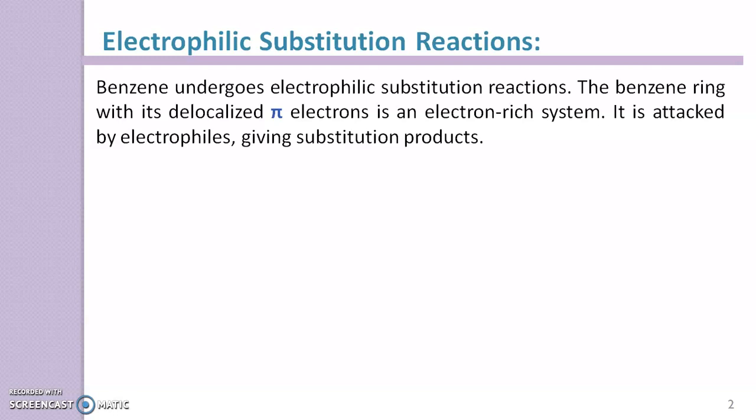Benzene undergoes electrophilic substitution reactions. The benzene ring, with its delocalized pi electrons, is an electron-rich system. It is attacked by electrophiles, giving substitution products. An electrophile is a chemical species that forms a bond with a nucleophile by accepting an electron pair — that is, electrophiles are electron-deficient species. Benzene, being an electron-rich system due to delocalized pi electrons, is therefore attacked by electrophiles to give a substitution product.